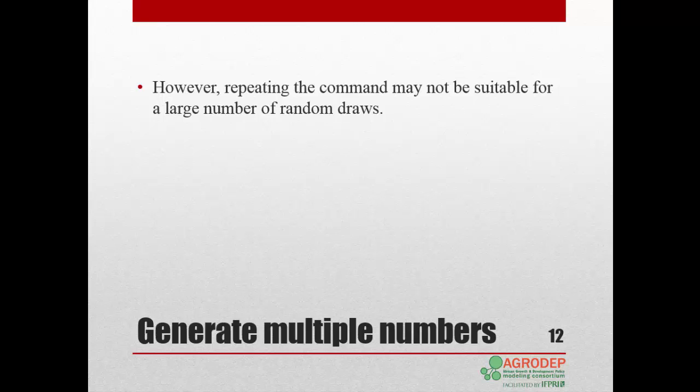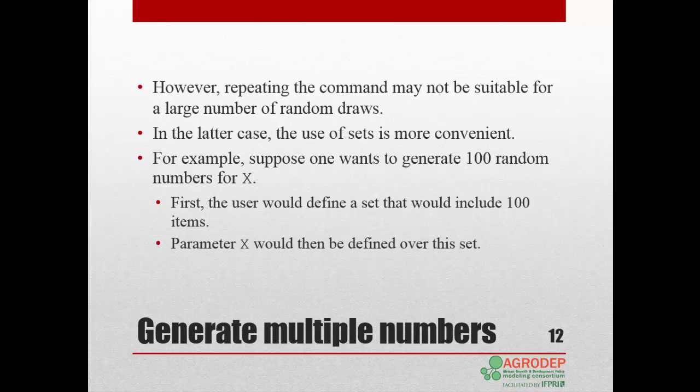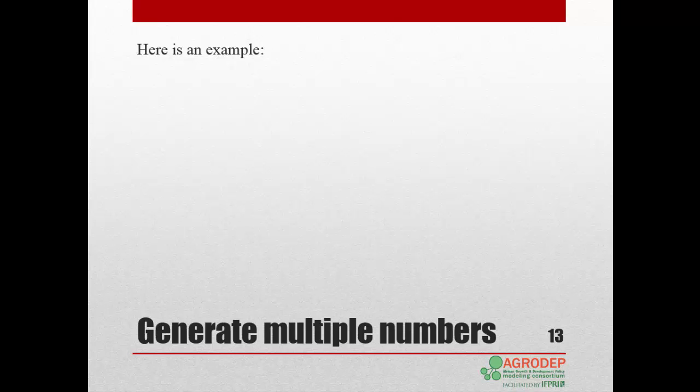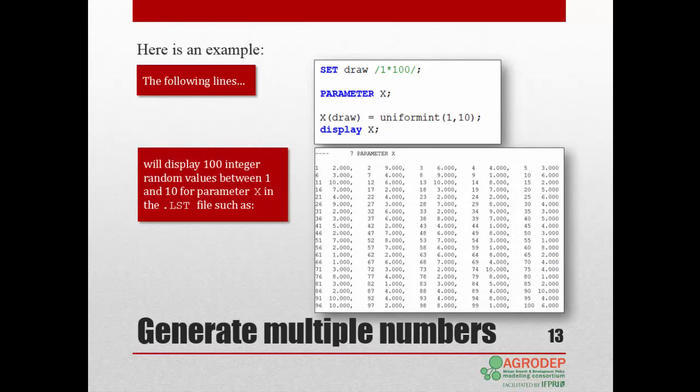However, this way could become quickly impractical for a large number of random draws. So, another way is to define sets that will have as items the number of draws. For example, suppose we want to generate 100 random numbers for X. First, we define a set that would include 100 items and define the parameter X over that set. We illustrate with an example. The following code will generate and display 100 integer random values between 1 and 10 for parameter X in the list file.